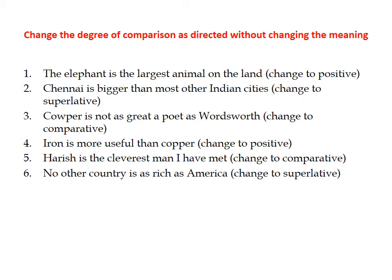Now the exercise section. We have six sentences, each with an adjective in one form — positive, comparative, or superlative. Your task is to change the degree of comparison as directed in the brackets at the end of each sentence. When you make the change, you must ensure that the meaning remains intact.